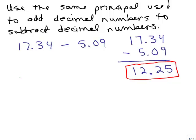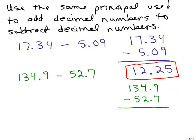So here's one for you to try. Do 134.9 minus 52.7. Try that problem. We just line up the decimals, right? So we're going to do it over on the side, 134.9 minus 52.7 and lining up the decimals, we're going to have to put the decimal down here. We've got 82.2. So those are our two answers.